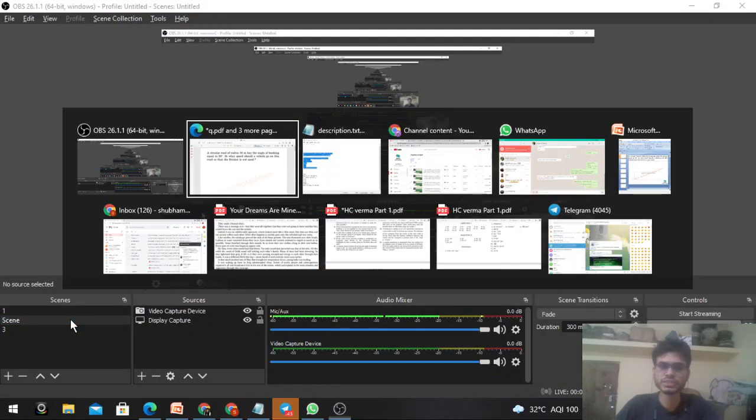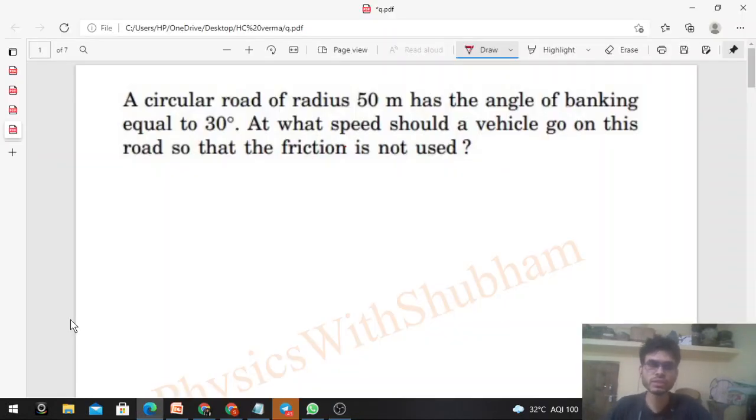Okay, hi everyone. So today let's discuss this interesting problem. A circular road of radius 50 meter has the angle of banking equal to 30 degrees. At what speed should a vehicle go on this road so that the friction is not used? Even though friction is present, it should not be used.